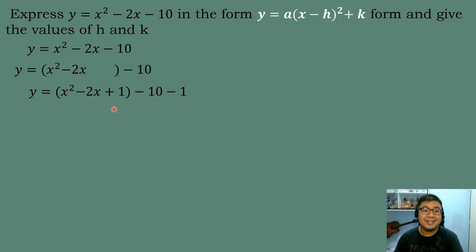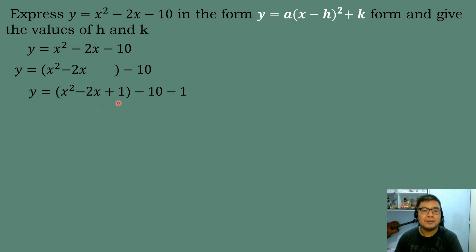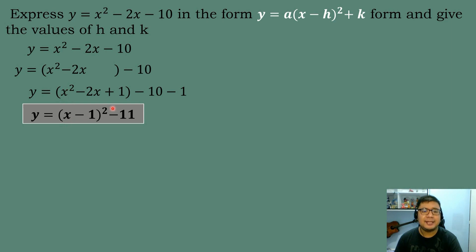If you add plus 1 on one side, you add minus 1 on the other side. Similarly, if you add plus 5, you add minus 5 on the other side. Then we factor the expression x² − 2x + 1. The factor is (x − 1)². We get the square root of x², which is x, and the square root of positive 1, which is 1. Taking the sign of the linear term — negative — we get (x − 1)², and negative 10 minus 1 equals negative 11. So this is the vertex form.